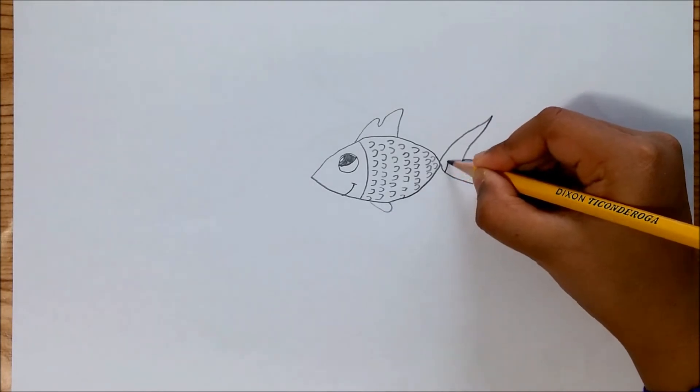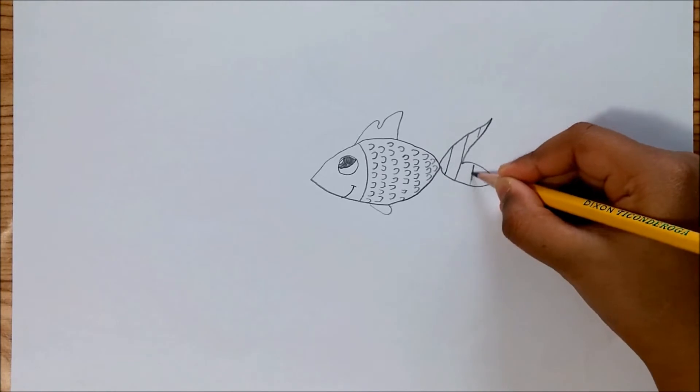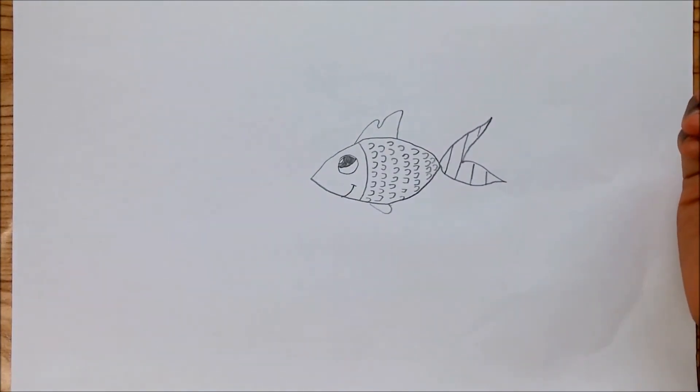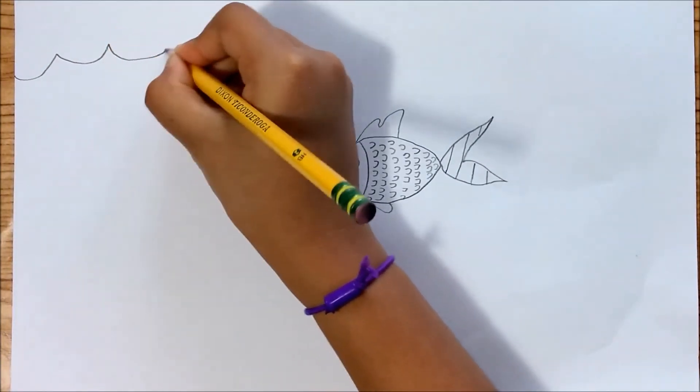Then for the tail, you can just draw little stripes. Now, for the background, you can just draw the water.